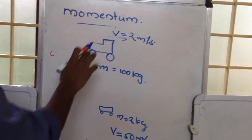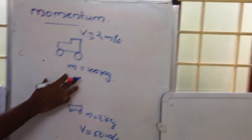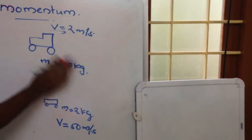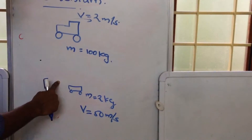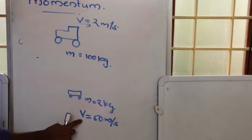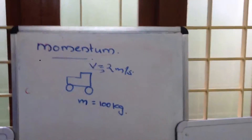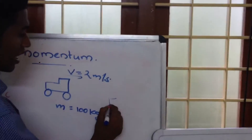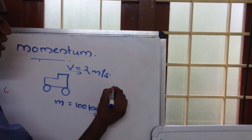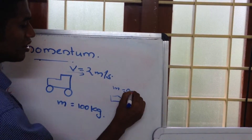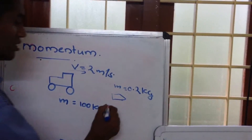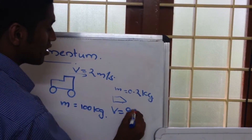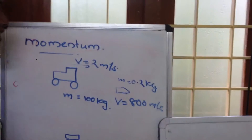So in the first case we are having a huge vehicle because its mass is 100 kg but its velocity is very small. In the second case we are having a small toy with a mass of 2 kg and a velocity of 50 m per second. We are also considering a third case where we have a bullet whose mass is very very small but its velocity v is equal to 800 m per second, so its velocity is very great.